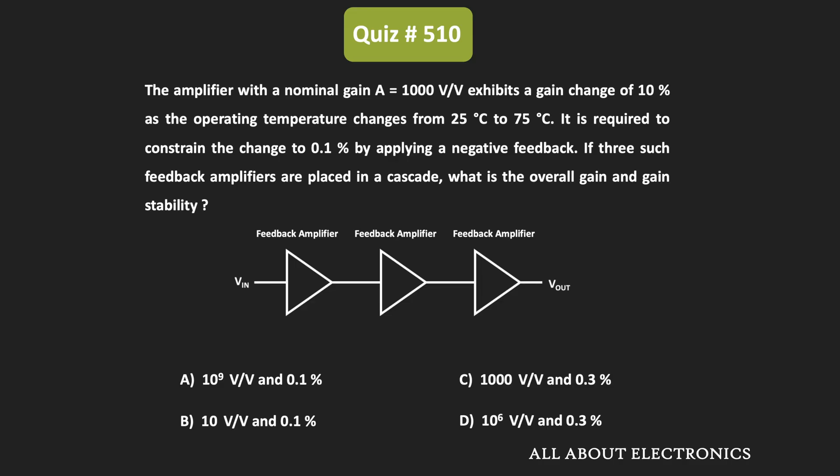Hey friends, welcome to the YouTube channel All About Electronics. In this question, we have been given that one amplifier has a nominal gain of 1000, and in the operating temperature range of 25 to 75 degree Celsius,